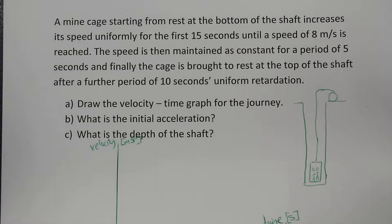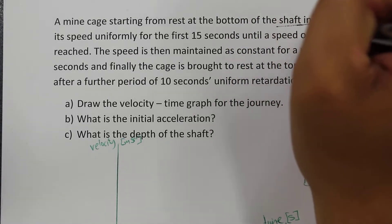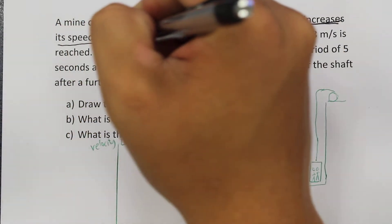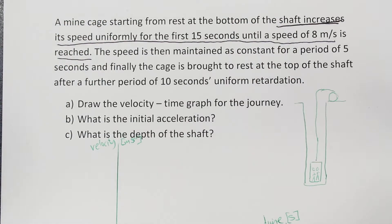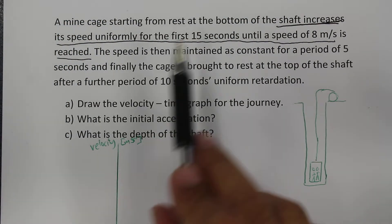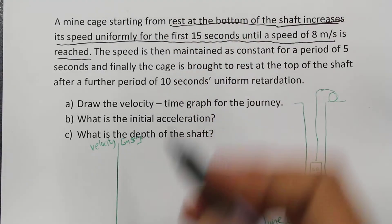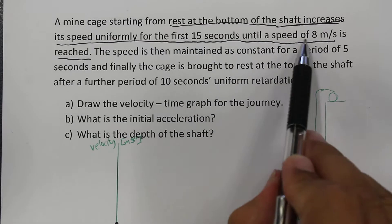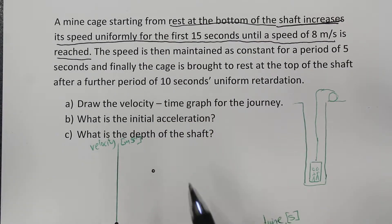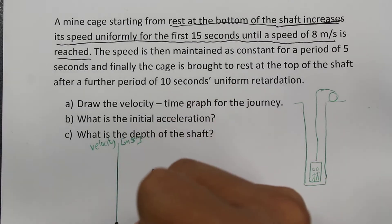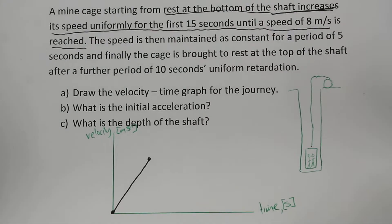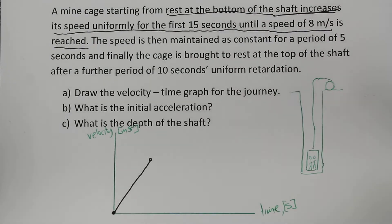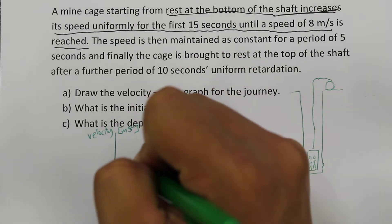There are three different phases of motion. The first part: the cage increases its speed uniformly for the first 15 seconds until a speed of 8 meters per second is reached. It starts from rest, so we draw a straight line from 0 to 8 meters per second at a uniform rate. We can mark 8 meters per second on the y-axis.